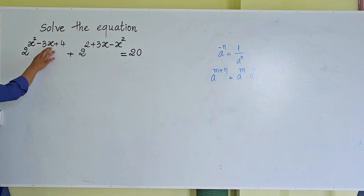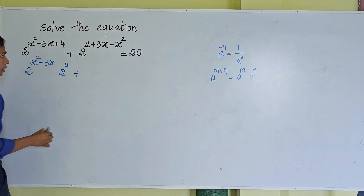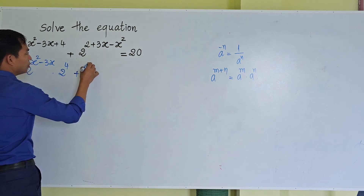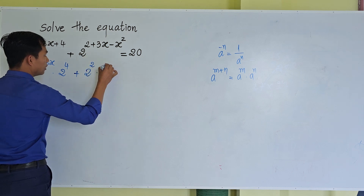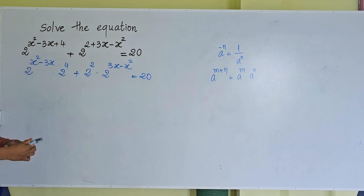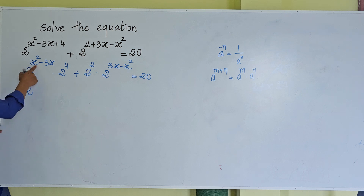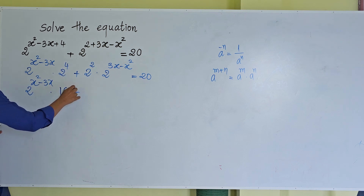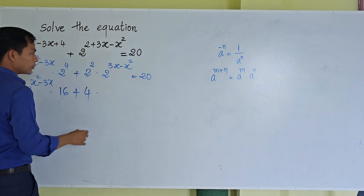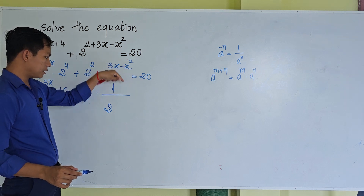So now I can rewrite 2^(x²-3x) as 2^(x²) · 2^(-3x), and the second term 2^(2+3x-x²) as 2² · 2^(3x) · 2^(-x²). This gives us 2^(x²-3x) · 2^4 = 16 and 2² = 4, times 1 divided by 2^(x²-3x).